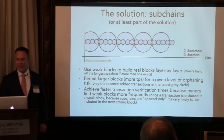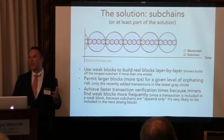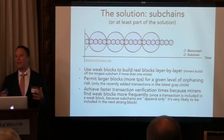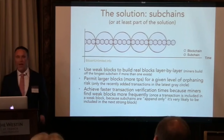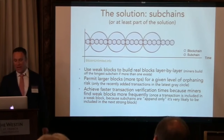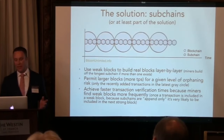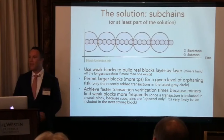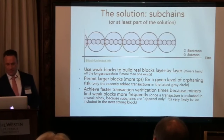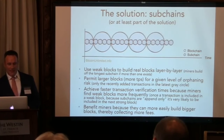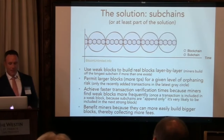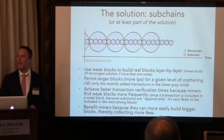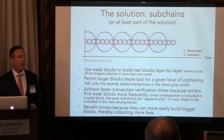Subchains achieve faster transaction verification times because miners find these weak blocks more frequently. Once a transaction is included in a weak block, because subchains are append-only, it is very likely to be included in the next strong block. Lastly, subchains benefit miners because they can more easily build bigger blocks and are likely to take more fees.